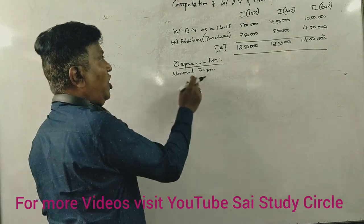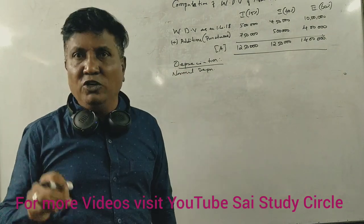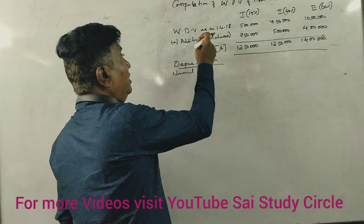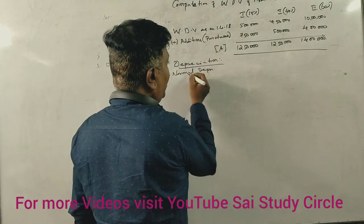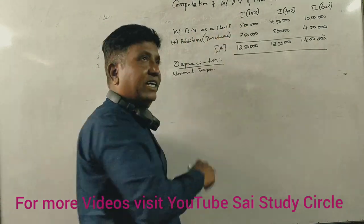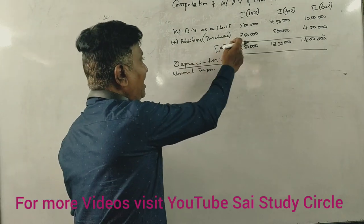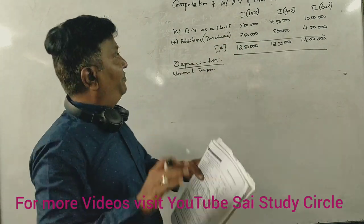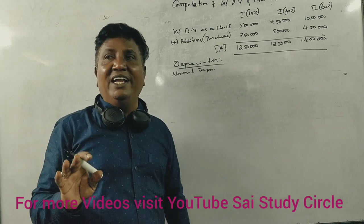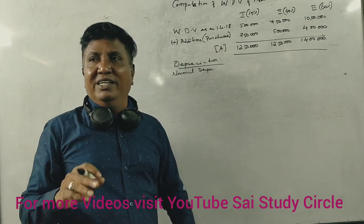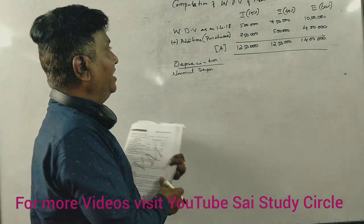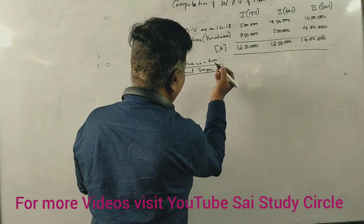Now normal depreciation. Written down value. Old asset 5 lakhs. So new asset 7 lakhs 50 thousand. 15%, full curve. There is normal depreciation.